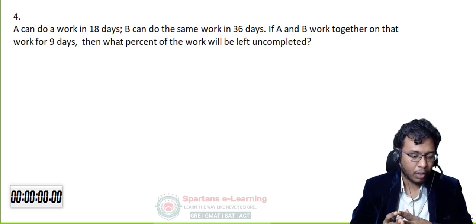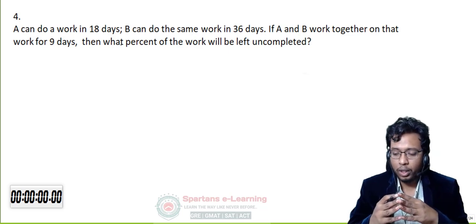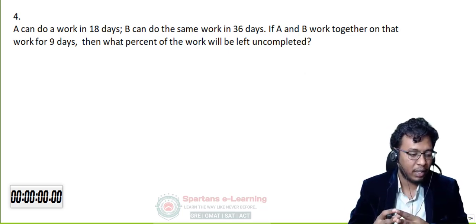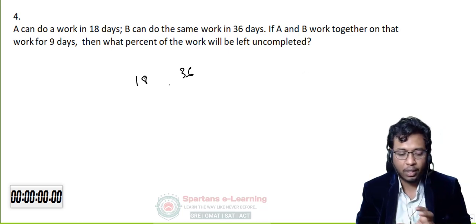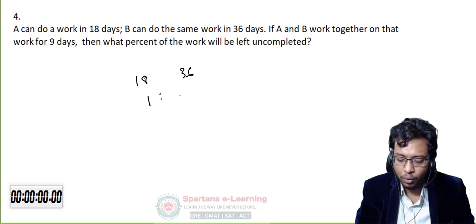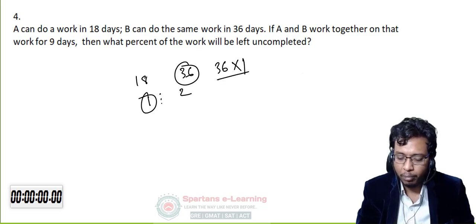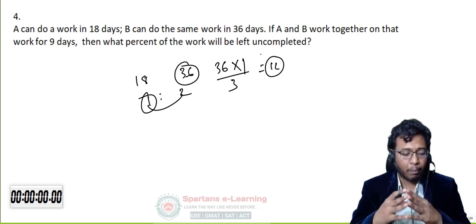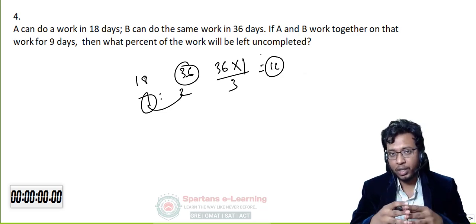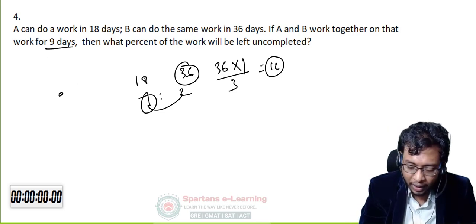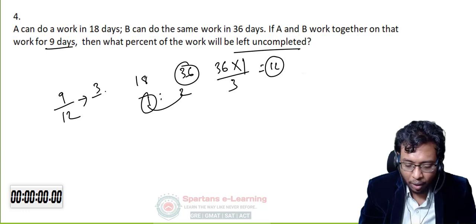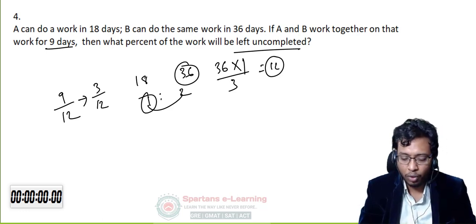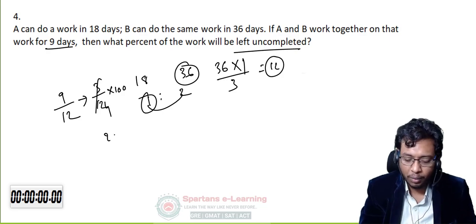You should know the LCM method first, then go for the shortcut. A = 18 days, B = 36 days. Ratio 18:36 = 1:2. Pick bigger number 36, multiply by smaller ratio 1 and divide by sum 3: 36/3 = 12 days total. They already worked 9 days — so completed = 9/12 × 100 = 75%, and uncompleted = 3/12 × 100 = 25%.